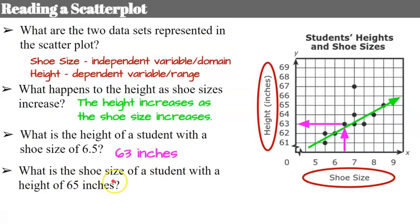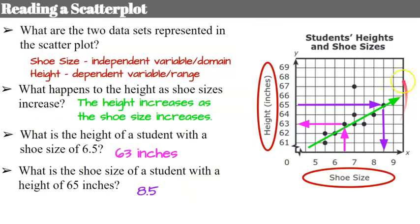To find the shoe size of a student with a height of 65 inches, we go to 65 inches on the graph, move over to our data point, then down to the X axis, and determine that the shoe size would be eight and a half. That's how you read and interpret a scatter plot.